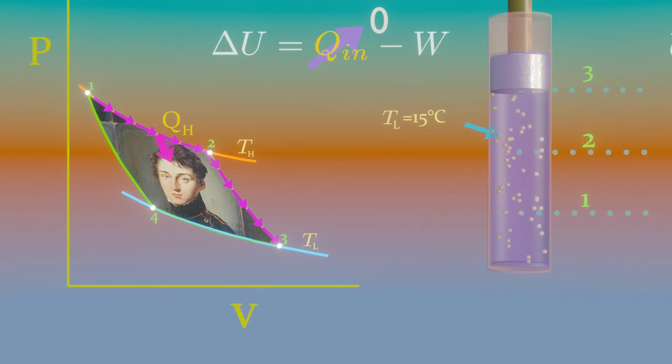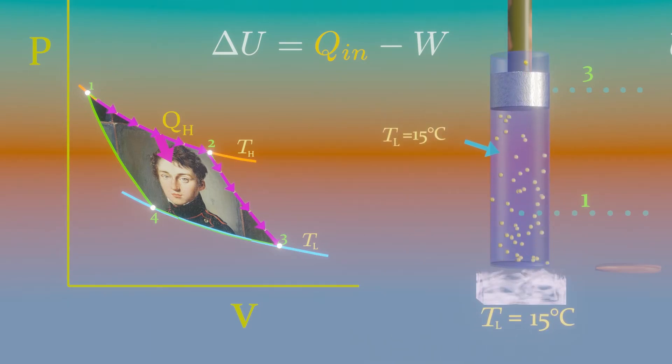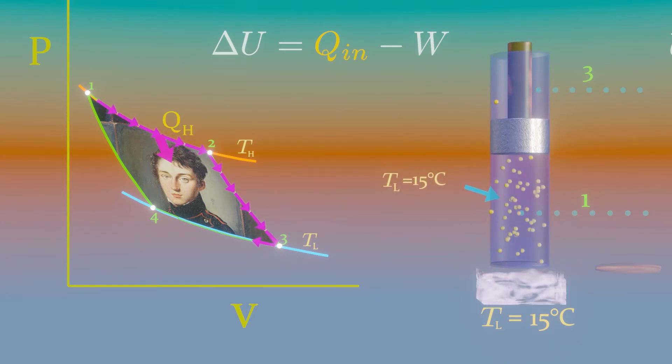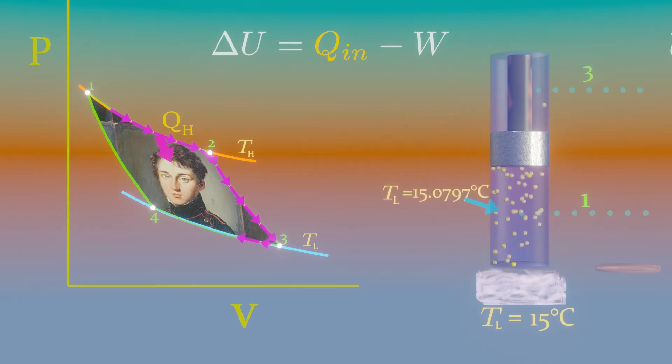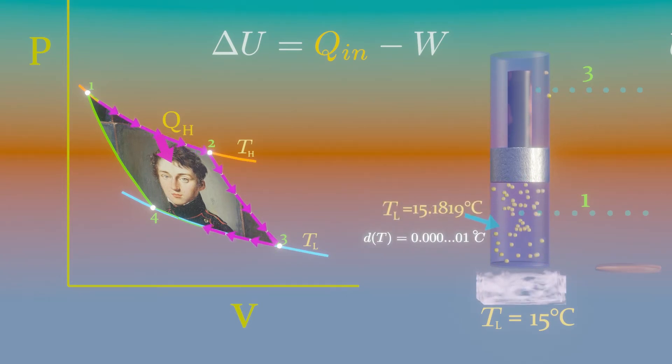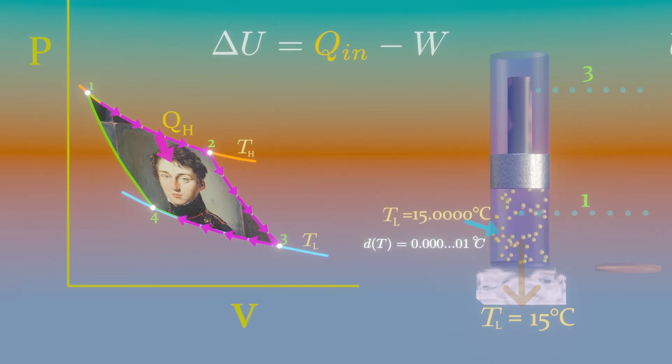At state 3, the insulation at the cylinder head is removed, and the cylinder is brought into contact with the sink at temperature TL. Now the piston is pushed inward by an external force, doing work on the gas. As the gas is compressed, its temperature tends to rise. But as soon as it rises by an infinitesimal amount dT, heat is transferred from the gas to the sink, causing the gas temperature to drop to TL.